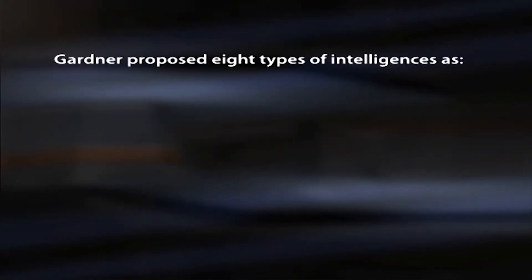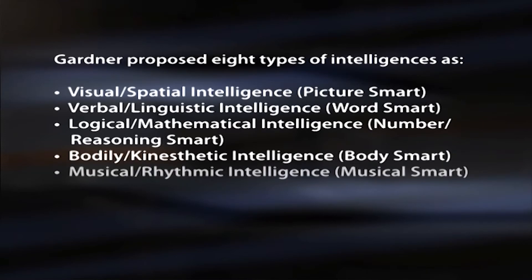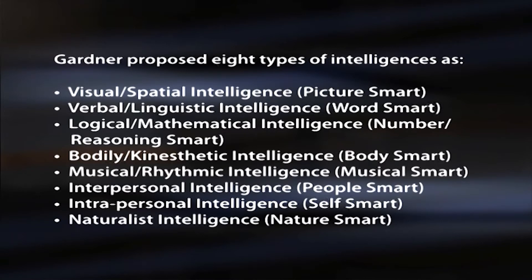Gardner proposed eight types of intelligences: visual-spatial intelligence (picture smart), verbal-linguistic intelligence (word smart), logical-mathematical intelligence (number or reasoning smart), bodily-kinesthetic intelligence (body smart), musical-rhythmic intelligence (musical smart), interpersonal intelligence (people smart), intrapersonal intelligence (self smart). Later he added one more — naturalistic intelligence (nature smart).